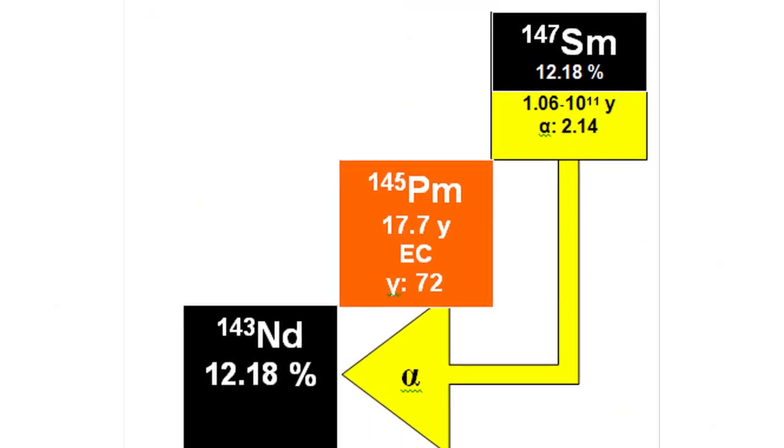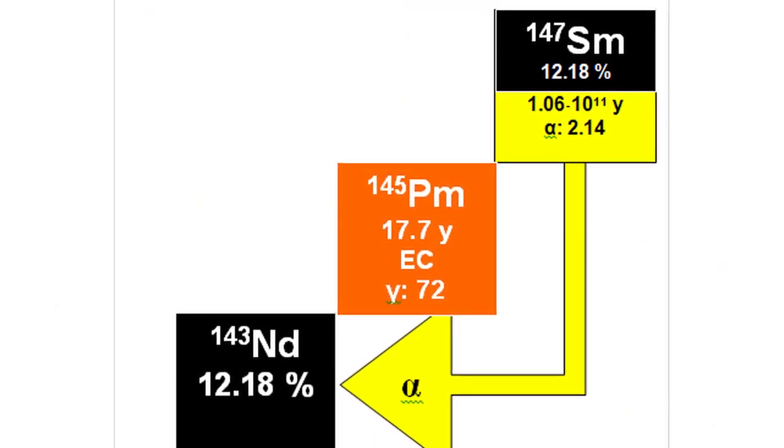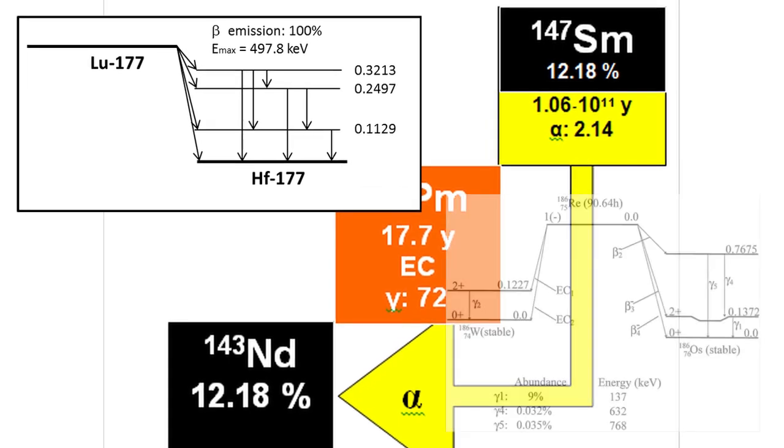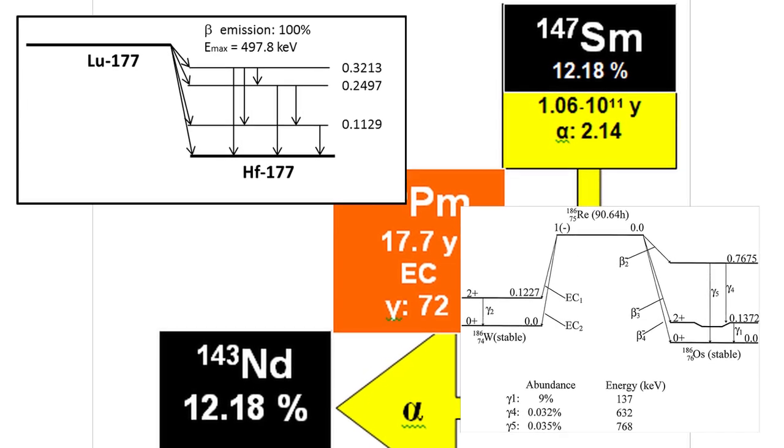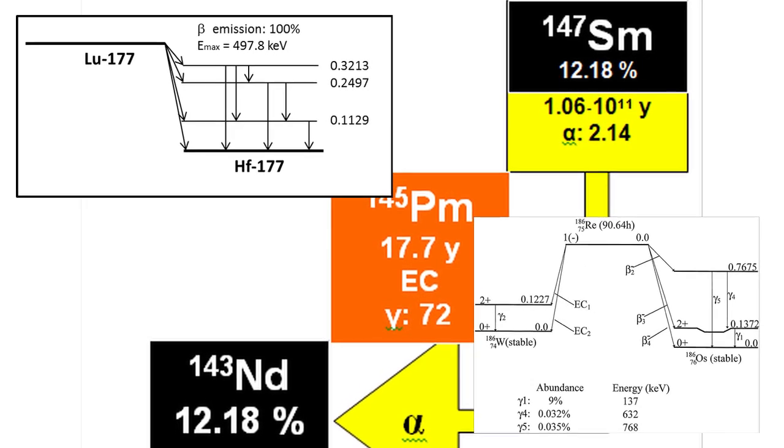Wherever we find ratios of samarium and neodymium, we also find ratios of lutetium to hafnium and rhenium to osmium, which allows us to cross-check and verify the dates we read.